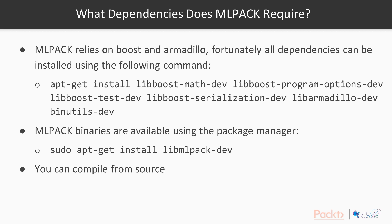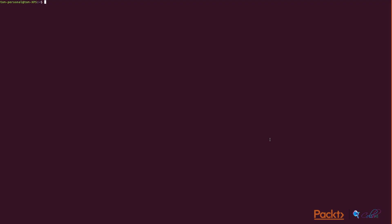Fortunately, all dependencies for Boost and Armadillo are available as binaries with your Linux distribution, so you can just go ahead and install them using your package manager. Just do `apt-get install` and then install all the relevant ones — Boost and Armadillo are the main ones. You don't have to worry too much about where they're installed. If you want, you can install from source, or if you've already got them installed, that's completely fine. There's also a binary available for MLPack, so you can download that using your package manager as well.